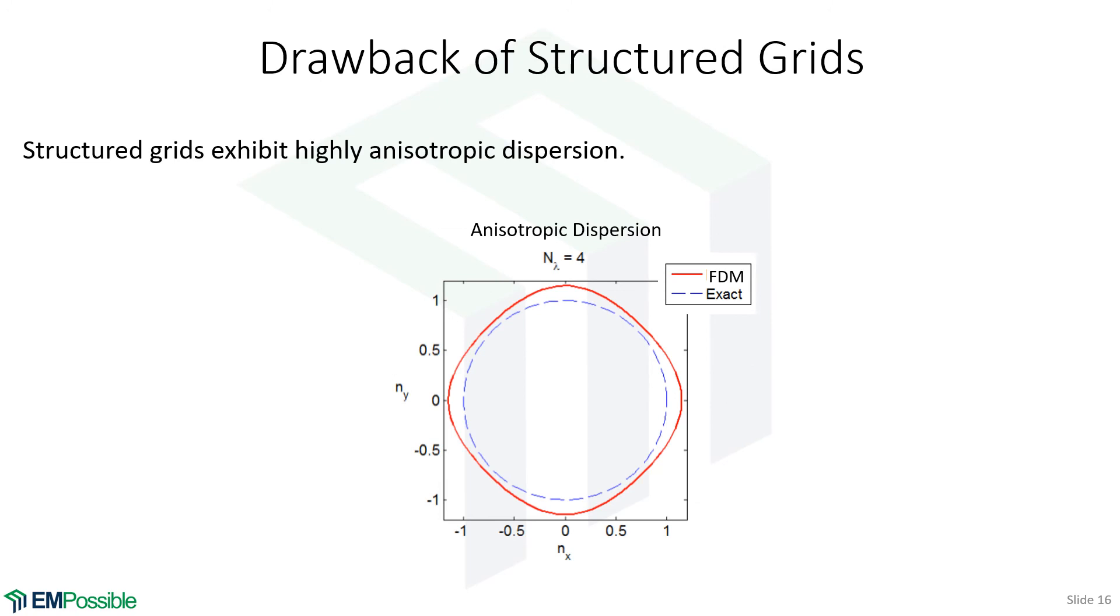If we have a structured grid, this is our normal Yee grid, and we look at the refractive index as a function of direction. If we have a physical wave in air, this is going to be the dispersion curve. It's the plot of refractive index as a function of direction, and it's the same in all directions.